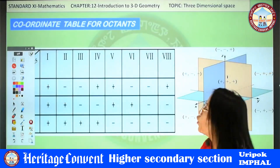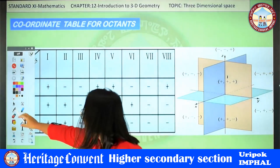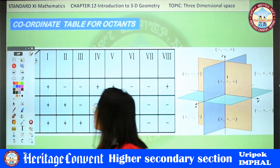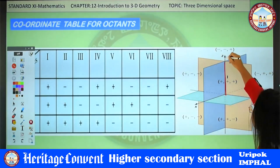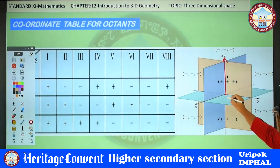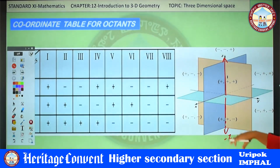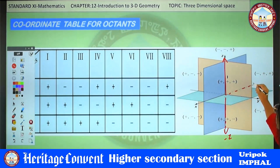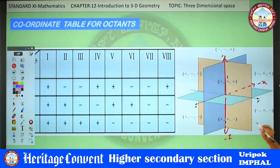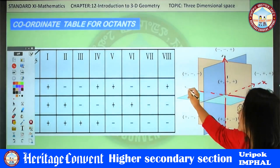Let's see the coordinate table for octants. Looking at the diagram, the solid lines represent the positive axes and dotted lines represent negative axes. So dotted Z means negative Z, dotted X means negative X, and the other directions indicate positive or negative Y accordingly. Using this, we can identify the sign of each coordinate in each octant.